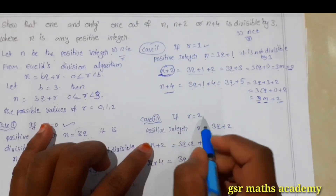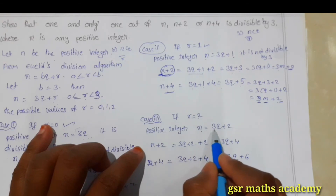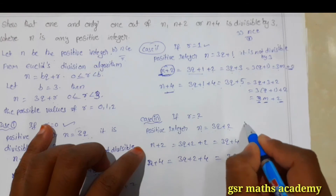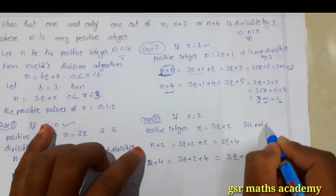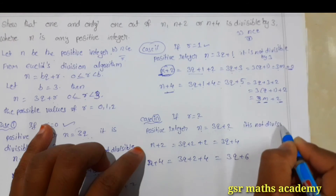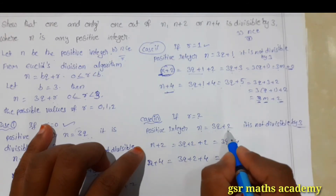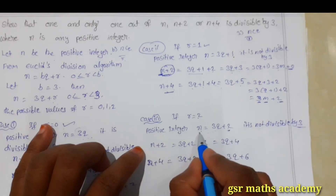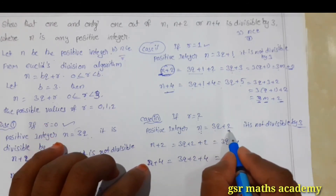Similarly, if you take r is equal to 2, then our positive integer n is equal to 3q plus 2, and it is not divisible by 3. Why? Because on dividing n by 3, we get remainder 2.